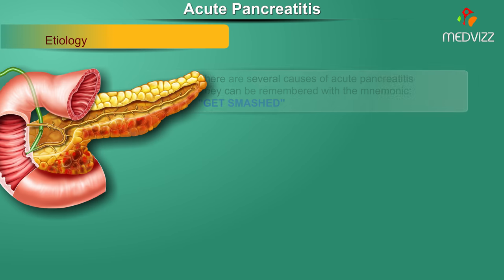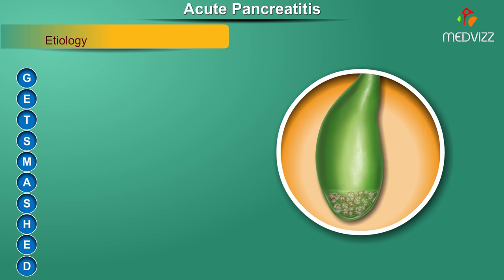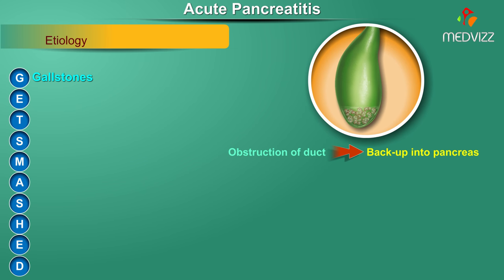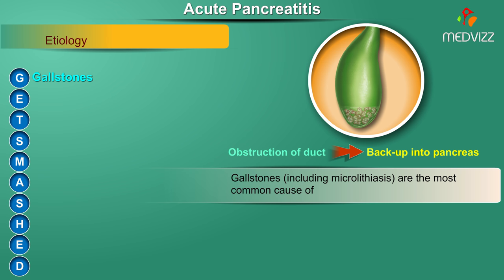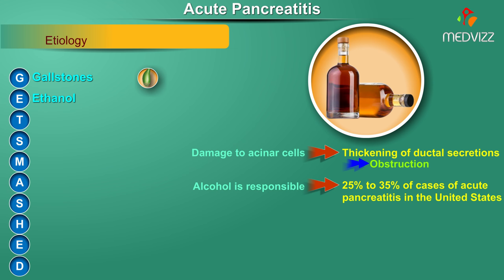There are several causes of acute pancreatitis, remembered with the mnemonic GET SMASHED. G stands for gallstones — obstruction of the duct resulting in backup into the pancreas. Gallstones including microlithiasis are the most common cause, accounting for about 40 to 70 percent of all cases. E stands for ethanol — damage to acinar cells resulting in thickening of ductal secretions leading to obstruction, secondary to ethanol consumption.